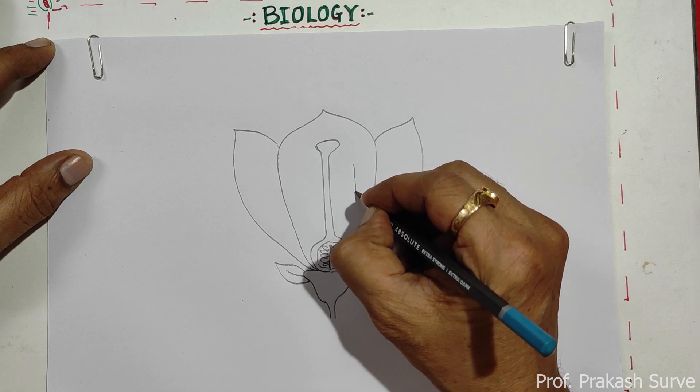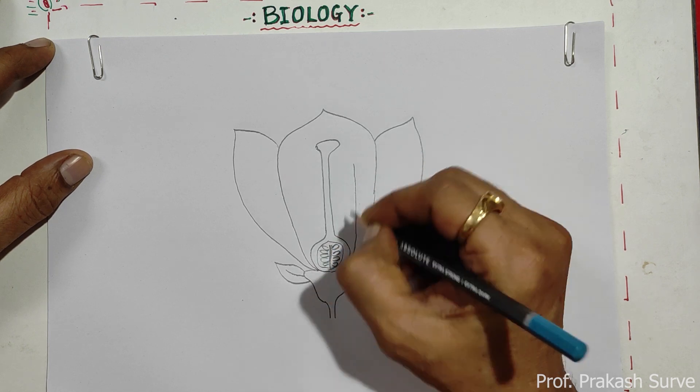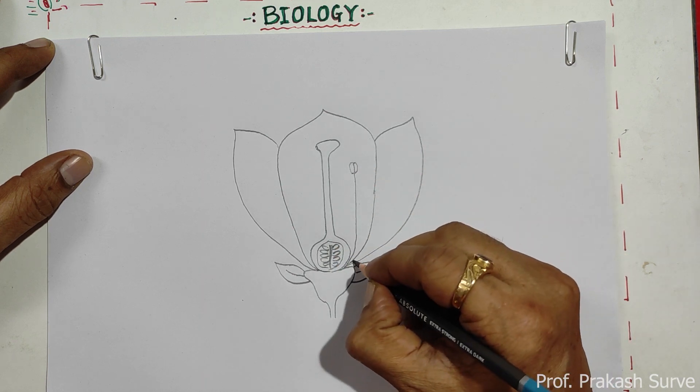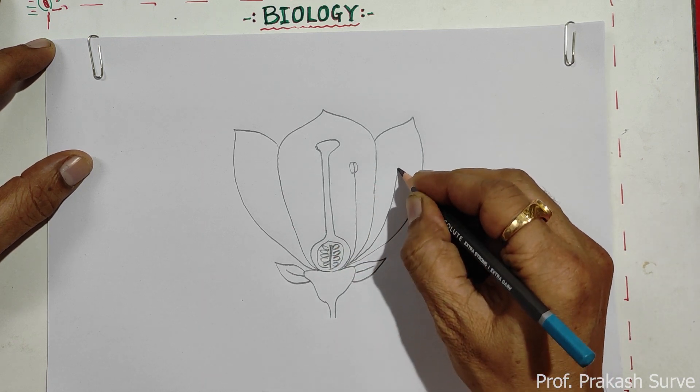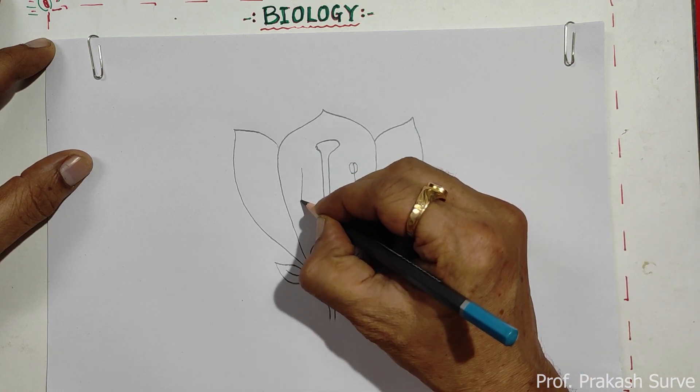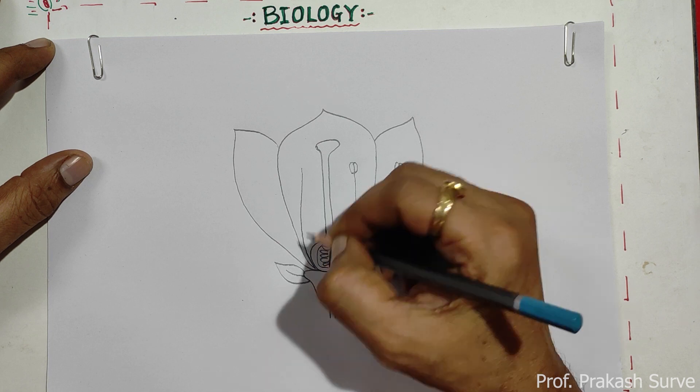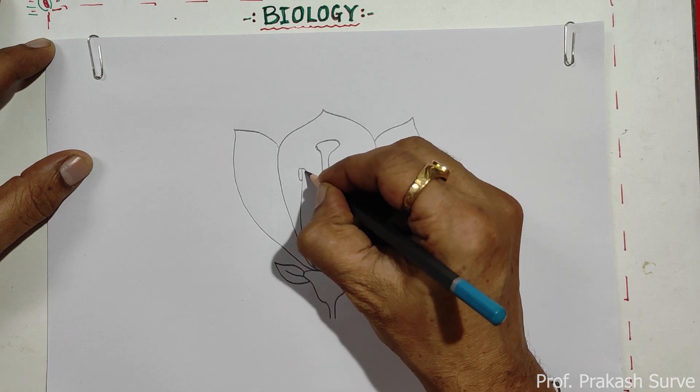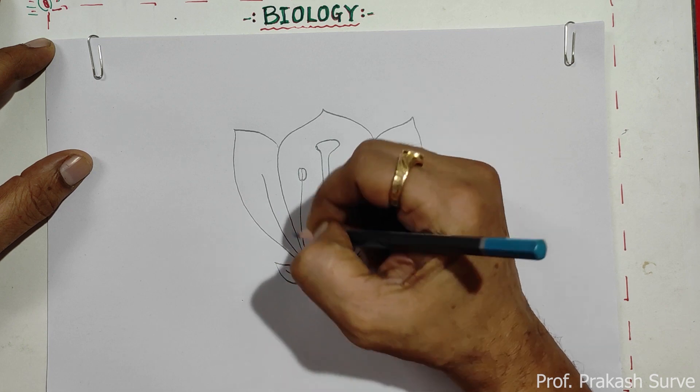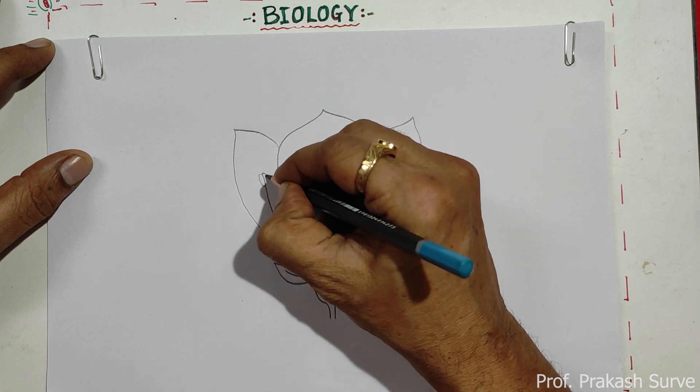Now we will draw the stamens. This is the anther and this one is the filament. So here, another filament with the anther. Here also, one filament with the anther. This is the next stamen.